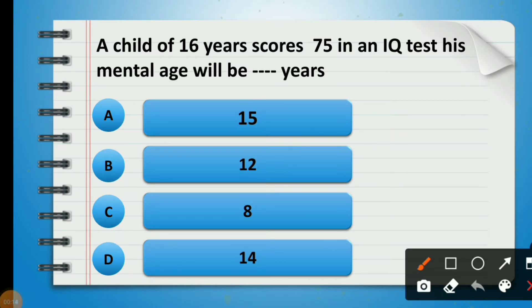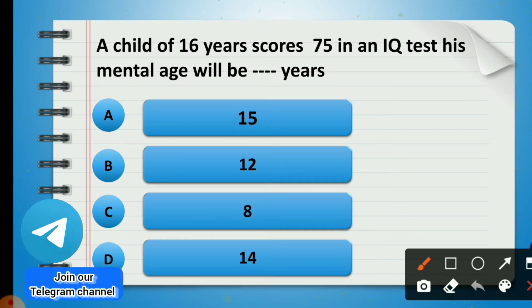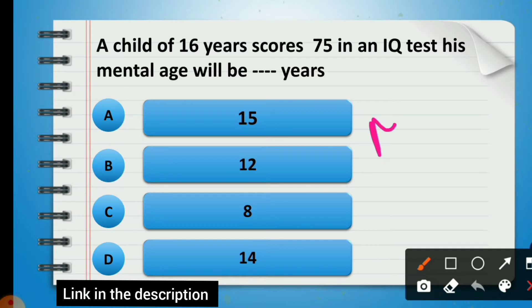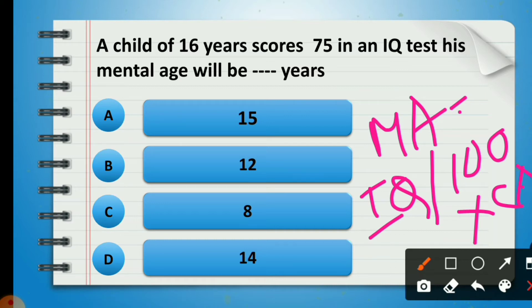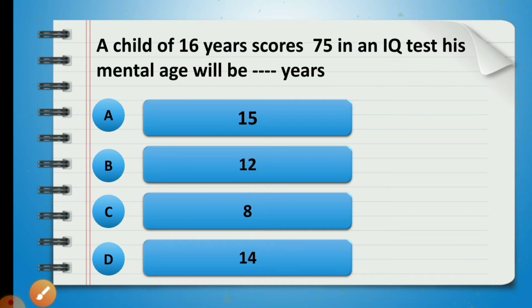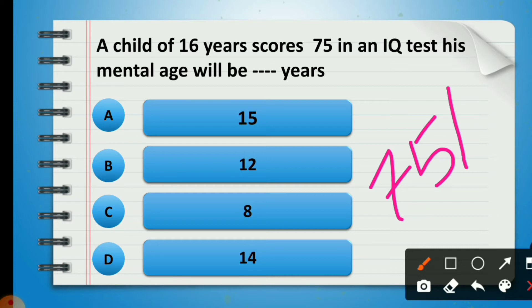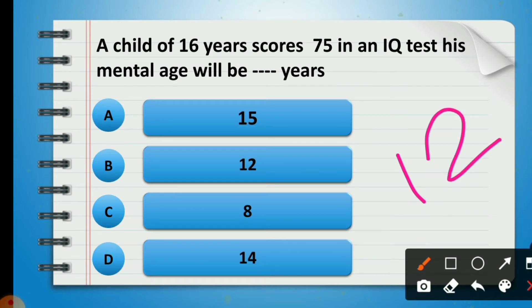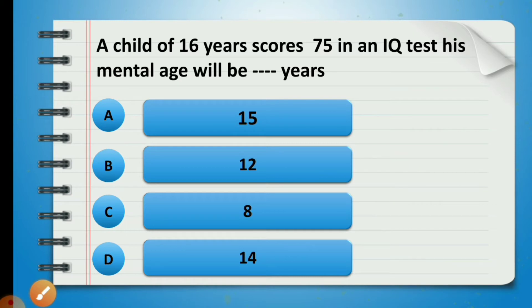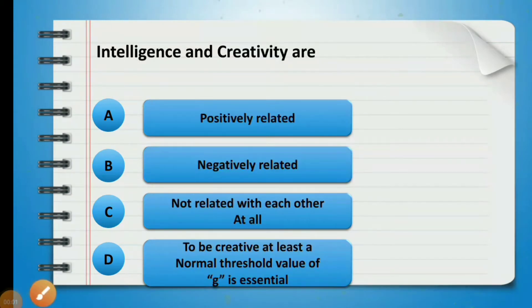The formula for IQ is: IQ score = (Mental Age / Chronological Age) × 100. So mental age = (IQ score / 100) × chronological age = (75 / 100) × 16 = 12. The answer is option B: 12.